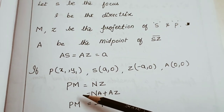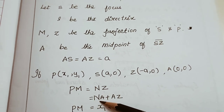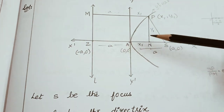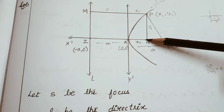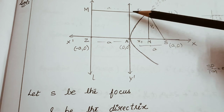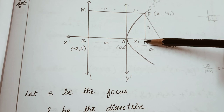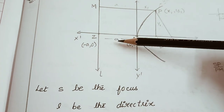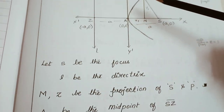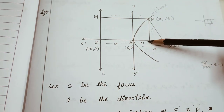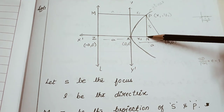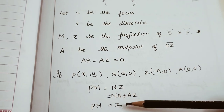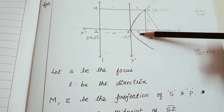Now PM equals NZ, and NZ equals NA plus AZ. From N to A the distance is x1, and from A to Z the distance is a. Since opposite sides of the rectangle are equal, if one side is y1 the other is also y1. So PM = NA + AZ = x1 + a. Therefore PM = x1 + a.